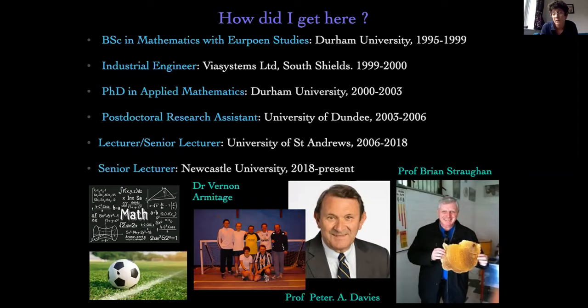I joined Via Systems Limited, a printed circuit board factory, as a graduate industrial engineer. They said they needed highly talented math graduates who could do capacity modeling and improve productivity — sounded great. But in reality, I was stood on a shop floor with a clipboard and a stopwatch, timing people working and putting numbers into a big Excel spreadsheet to see how many units they should make a week. Even though it was a job I hated, it was a really good experience because it taught me that I loved learning — and I hadn't appreciated that until that point. As soon as I stopped learning, I quickly realized that I did, and I decided to go back to university.